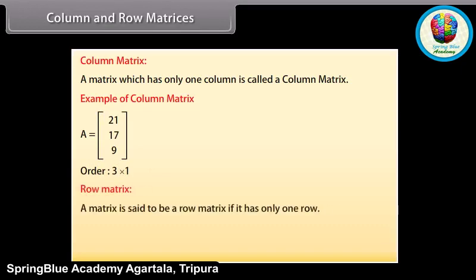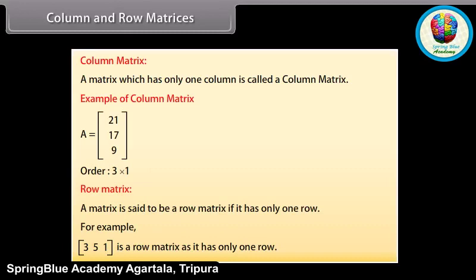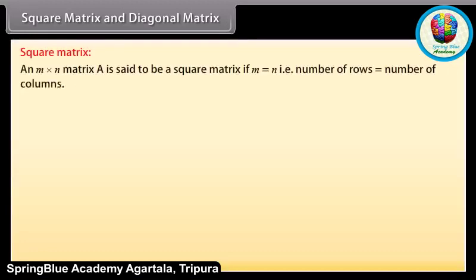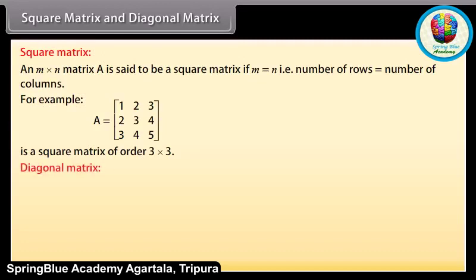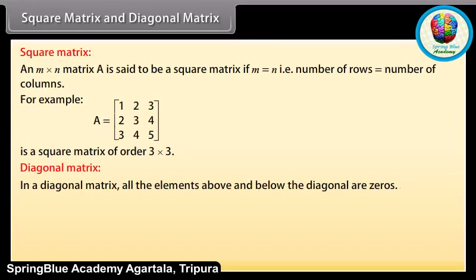Row matrix: a matrix is said to be a row matrix if it has only one row. For example, 3, 5, 1 is a row matrix as it has only one row. Square matrix: an M by N matrix A is said to be a square matrix if M equals N, that is, the number of rows equals the number of columns. For example, A is a square matrix of order 3 by 3. Diagonal matrix: in a diagonal matrix, all the elements above and below the diagonal are zeros. For example, B is a diagonal matrix.